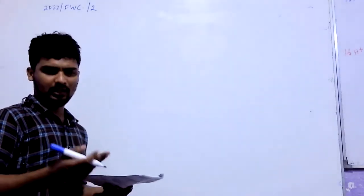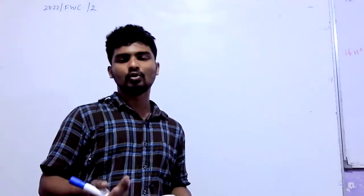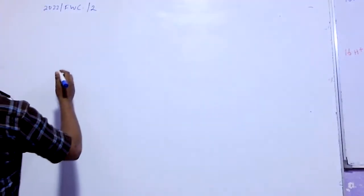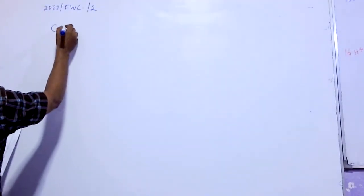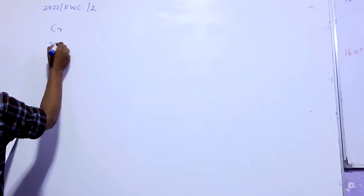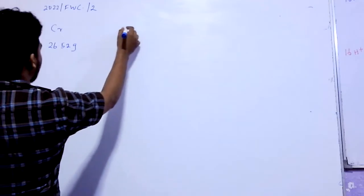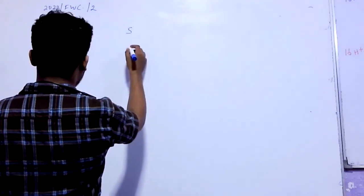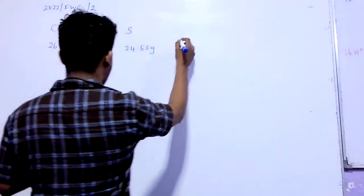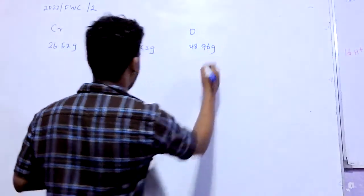If you want to take the 3-year calculation, this is the 3-year calculation. So first, we will take the 3-year calculation. Chromium is 26.525 grams, sulfur is 24.553 grams, oxygen is 48.96 grams.